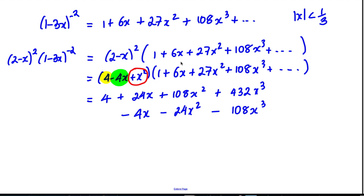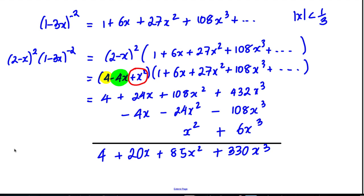Lastly, I'm going to multiply the x² by each of these. So x² times 1 is simply x². It will go in the x² column. And x² times 6x is going to be plus 6x³, which goes in the x³ column. Now because I've written it in this way, everything's nice and easy to work out. I just add down the columns. So that's 4 + 20x, 108 - 24 + 1 is going to be plus 85x². And then 432 - 108 + 6 is going to be plus 330x³ as required.